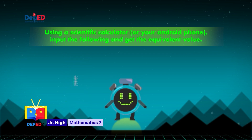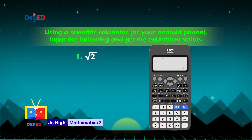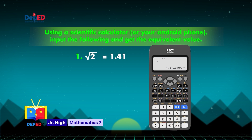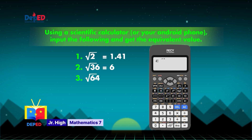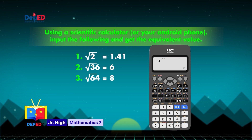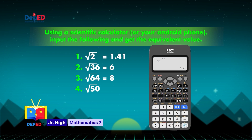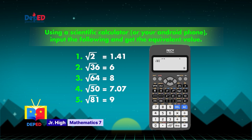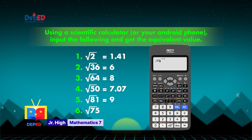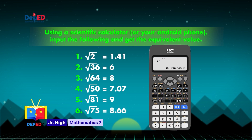Let's check. The square root of 2, rounded to the nearest hundredths, is 1.41. The square root of 36 is 6. The square root of 64 is 8. The square root of 50 is 5 square root of 2, which rounds to 7.07. The square root of 81 is 9. And the square root of 75 is 5 square root of 3, which rounds to 8.66.